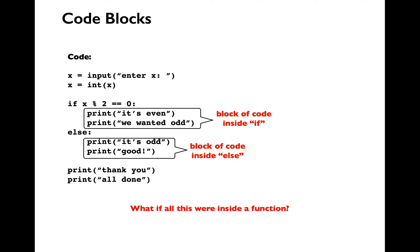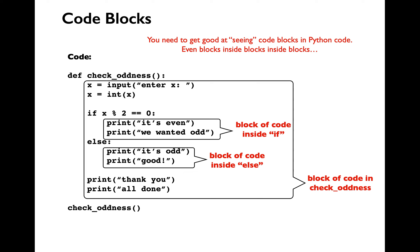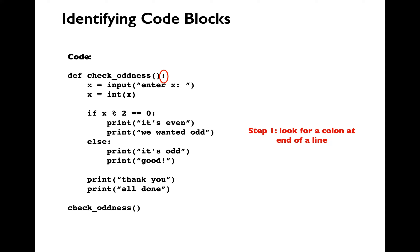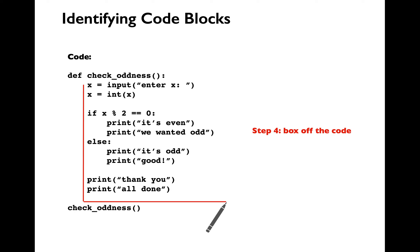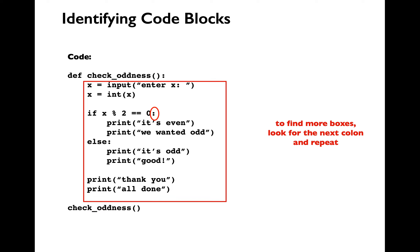Let's consider the case where all of these lines of code are inside a function — then you're going to have one more block of code. We need to understand how we can identify code blocks in Python code. You need to look for the colon, then start marking off the lines of code which are indented after the colon, until you reach a line of code which is no longer indented or you reach the end of the program. Then you can box off the code you have identified — that represents one block of code. You can then proceed to identifying the next colon and the block of code under that colon.